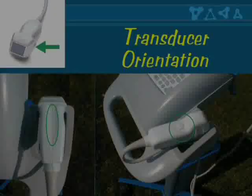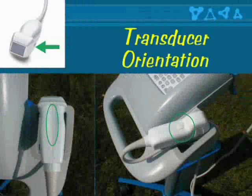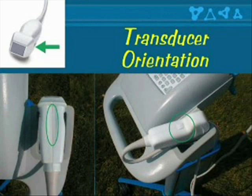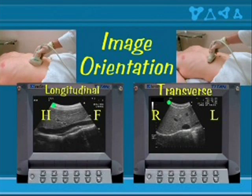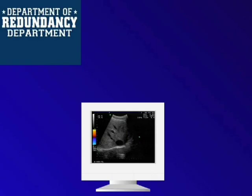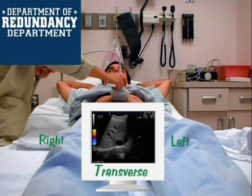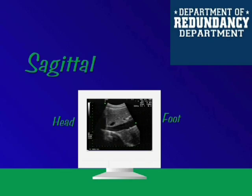Each transducer has an index mark which indicates one side of the transducer. This indicates the proper way to hold the probe such that the index corresponds with the green dot on screen. Normally the green dot is towards the head or the patient's right side in body imaging. Holding the probe transversely across the body reveals a transverse image with a left and right side. Holding the probe along the long axis of the body yields a sagittal image, with one side towards the head and the other towards the foot.